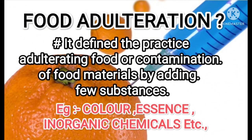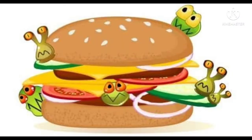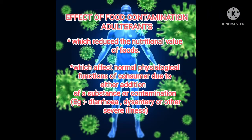What is food adulteration? It is defined as the practice of adulterating food, or contamination of food materials by adding foreign substances — for example, color substances, essence, inorganic chemicals, etc. The effects of food adulteration on the body include reduced nutritional value, affected normal physiological functions due to added chemical substances, and health troubles such as diarrhea, dysentery, or other severe illness.